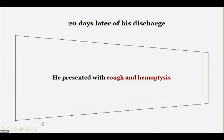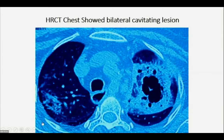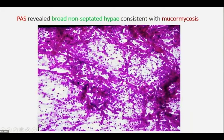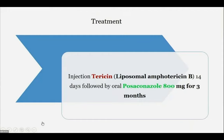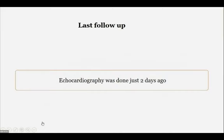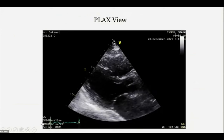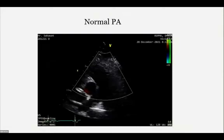Twenty days after discharge he again presented with cough and hemoptysis. CT scan revealed bilateral thick-walled cavitating lesions in both lungs. CT-guided biopsy was performed and histopathology confirmed mucormycosis — black fungus. He was treated with liposomal amphotericin B and oral posaconazole for three consecutive months. At his most recent follow-up two days ago, he is doing well: echo shows normal LV wall motion, LVEF 55%, LVID 45 mm, and no tricuspid regurgitation with normal RV.